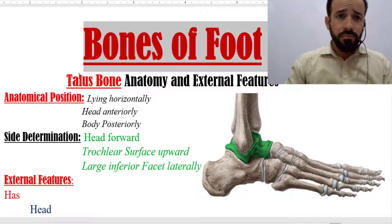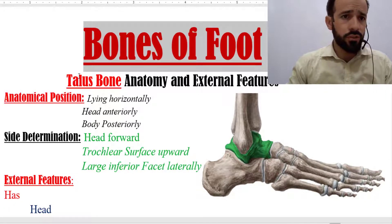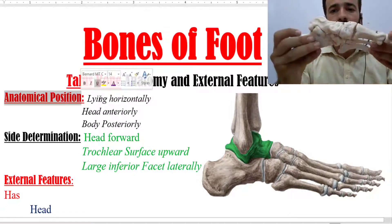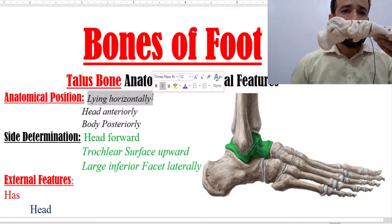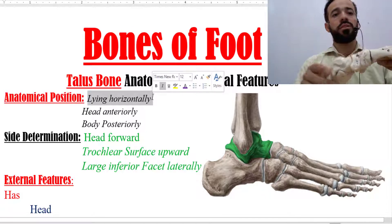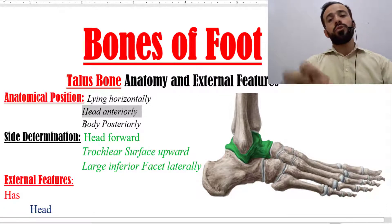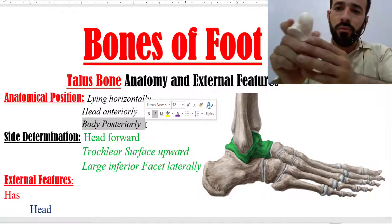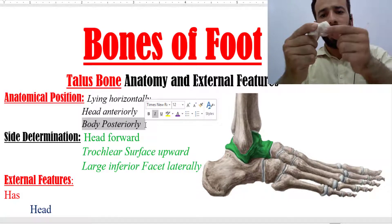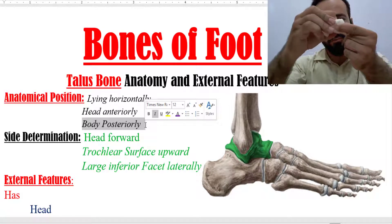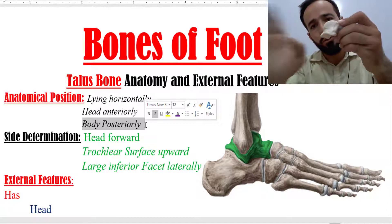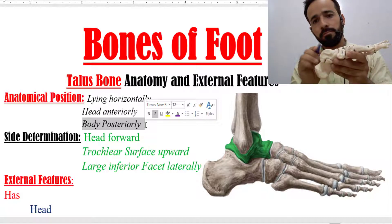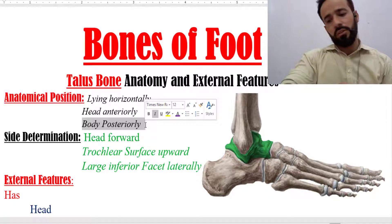Let's go for it. The talus bone external features — first of all, about its anatomical position. This bone is lying horizontally, and its head is anteriorly while the body is posteriorly. This bone is divided into three parts, but right now we just mentioned two: the head, which is a very oval-shaped head kept anteriorly, and the body, which I am holding in my right hand, kept posteriorly.